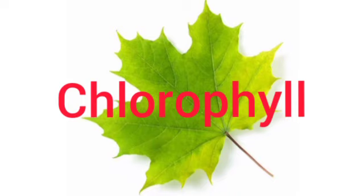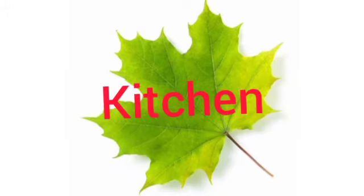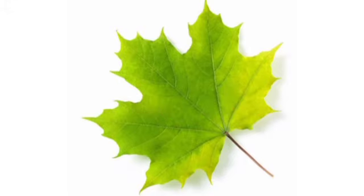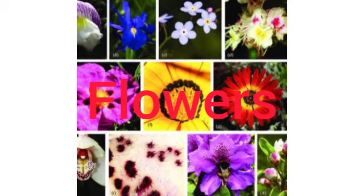Leaves contain a green-colored substance called chlorophyll. Due to the presence of chlorophyll, the leaves are green in color. Leaves are also called the kitchen of green plants.